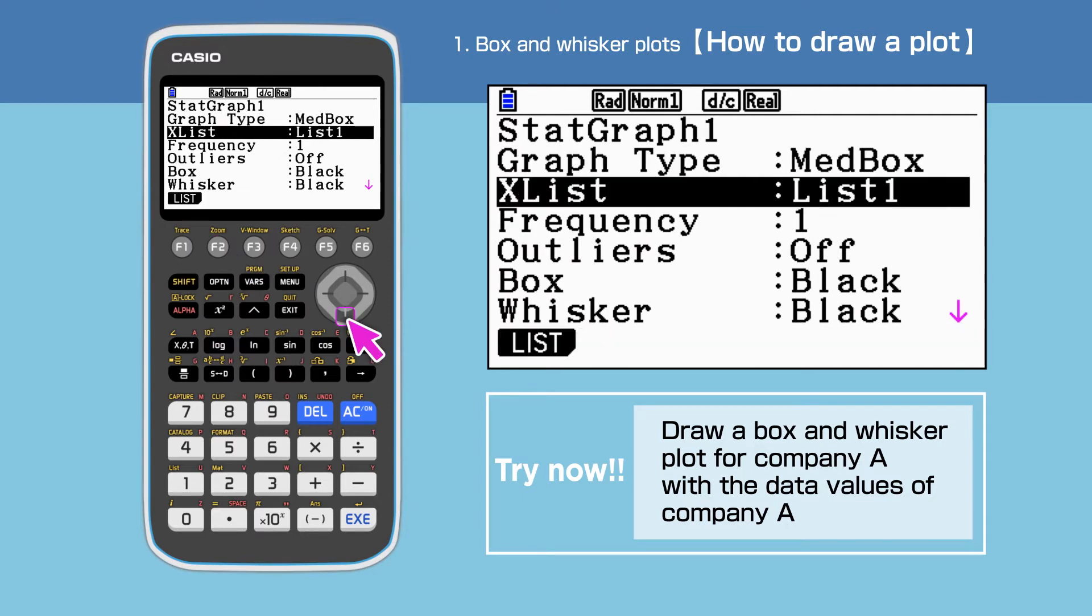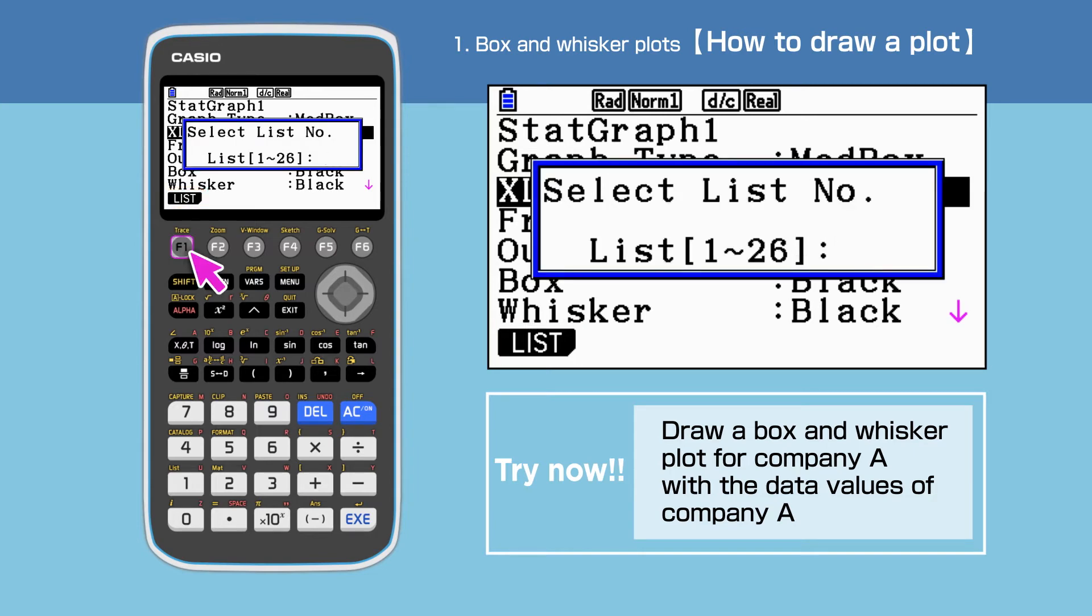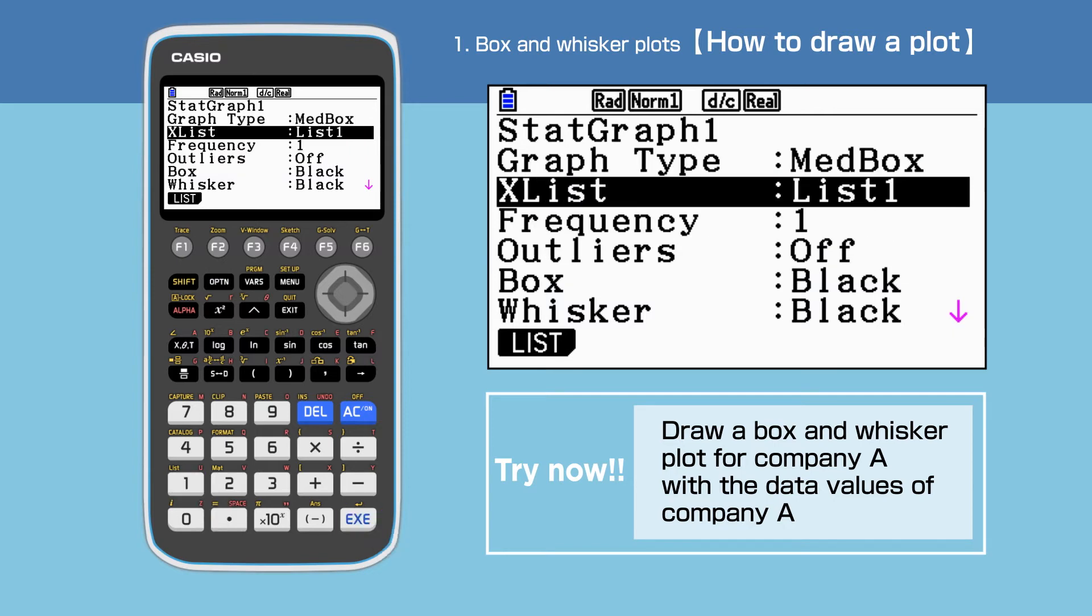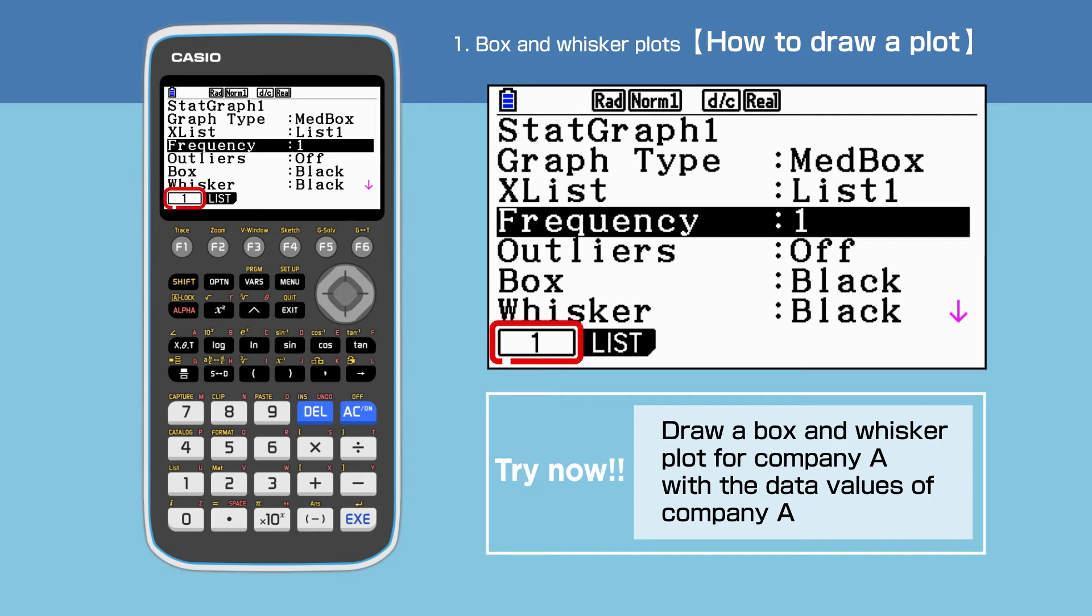We entered the data for company A in list 1 earlier, so choose list 1 for x list. The dataset we are looking at in this example is one variable list of data, so we select F1 to choose 1 for frequency.